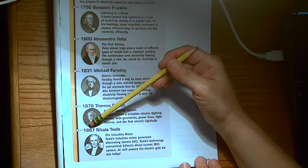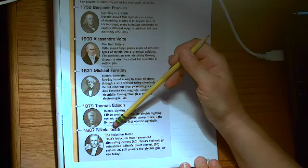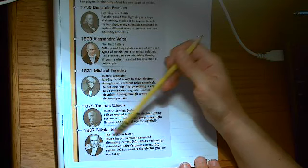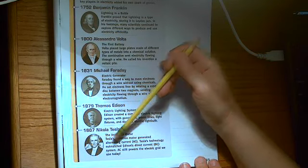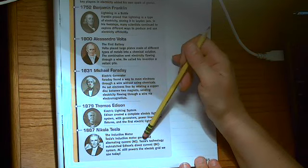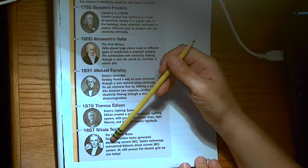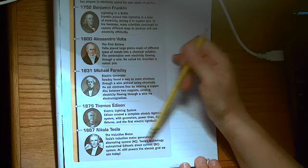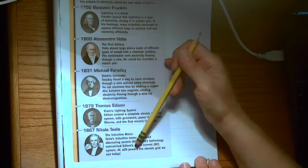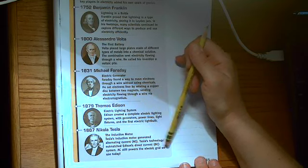1887, Nikola Tesla, the induction motor. Tesla's induction motor generated alternating current or AC. Tesla's technology outmatched Edison's direct current or DC system. AC still powers the electric grid we use today.